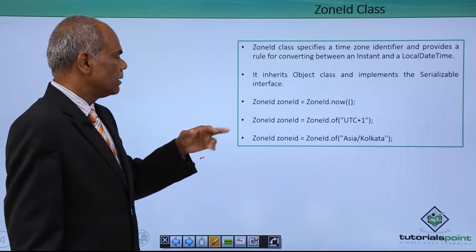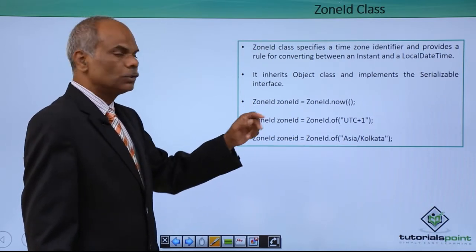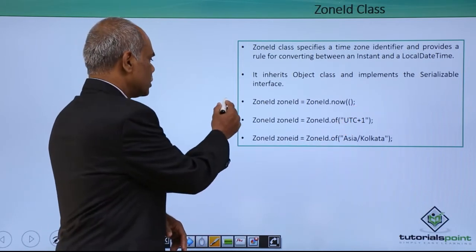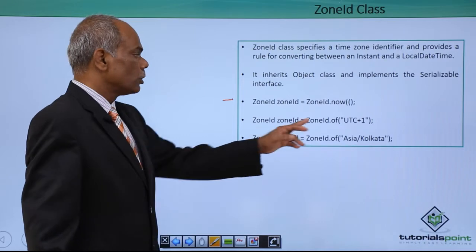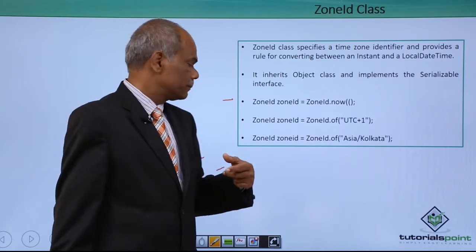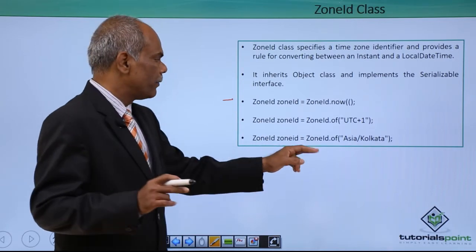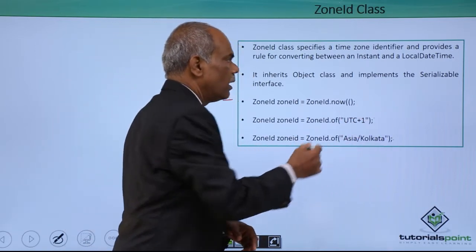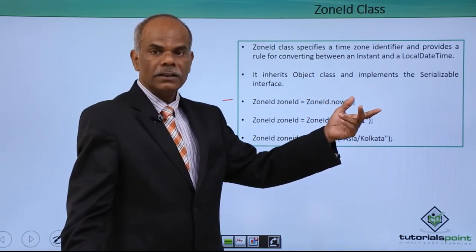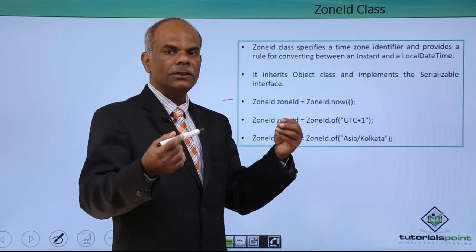How to obtain the object? ZoneID, the object name is also ZoneID, but this is in upper case, this is in lower case, equals ZoneID dot now. This is the standard method of creating a ZoneID object. You can also create the ZoneID by ZoneID dot off the offset and you can also create ZoneID dot off by giving the identifier. Both ways you can create a ZoneID. Now we will fetch the ZoneID of the time that is present in the system clock.